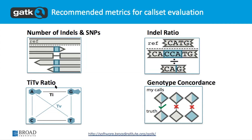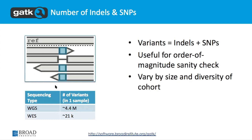So the metrics we talked about: the raw number of indels and SNPs, the ratio of insertions to deletions, the TiTv ratio — transitions to transversions — and genotype concordance. We're going to talk about each one of these in detail.